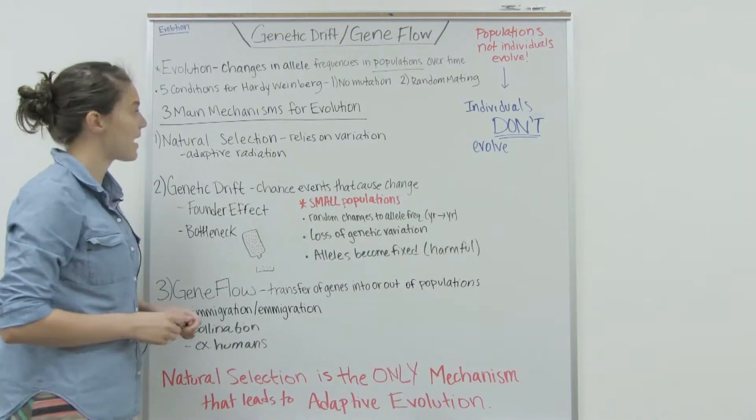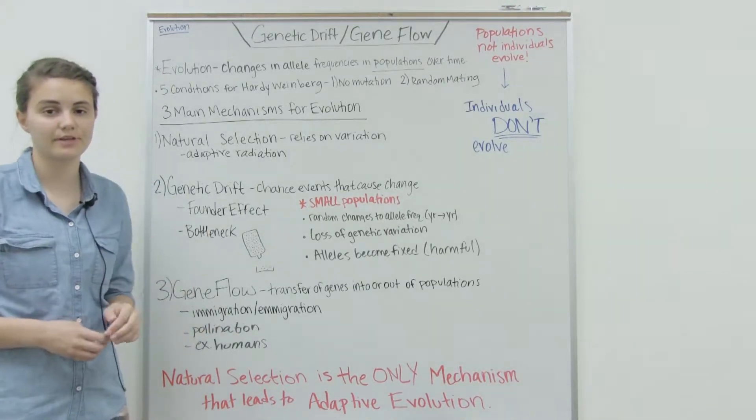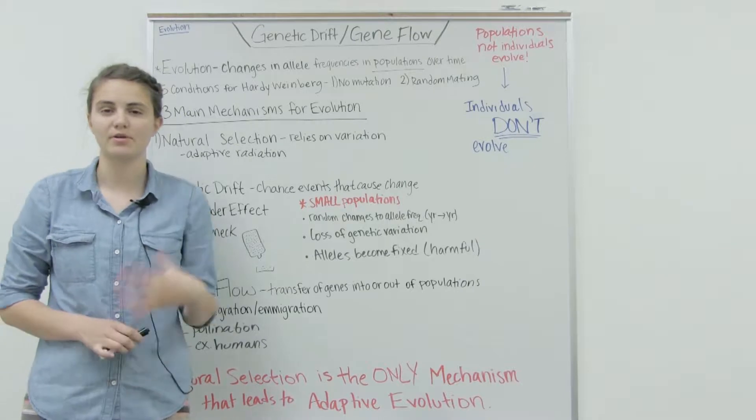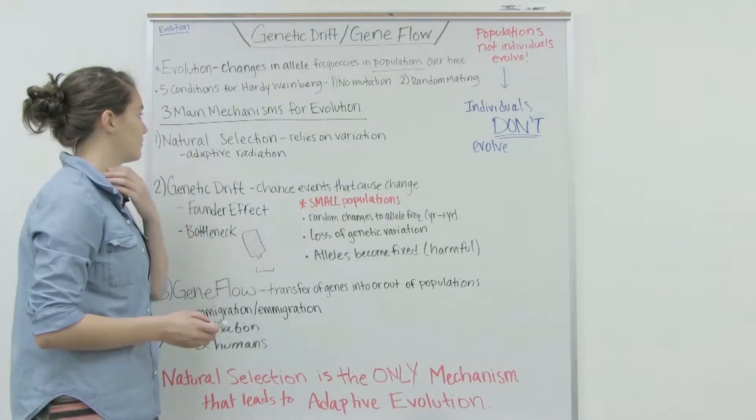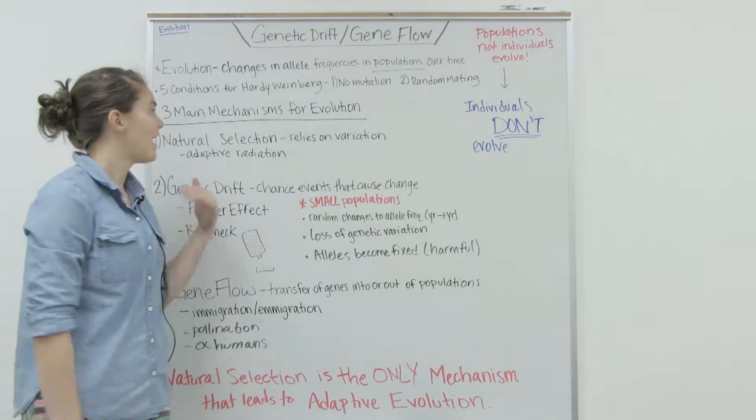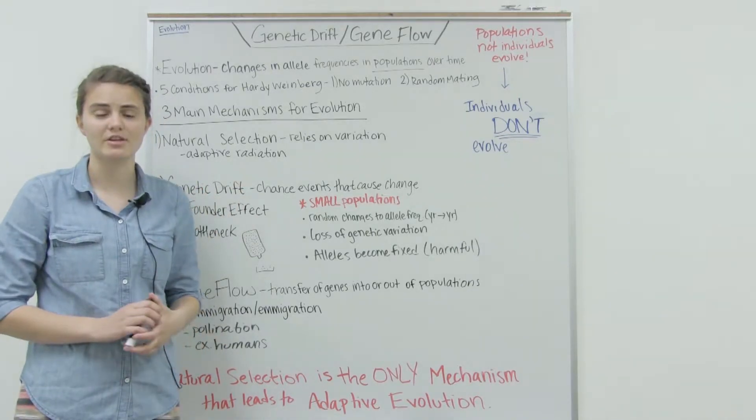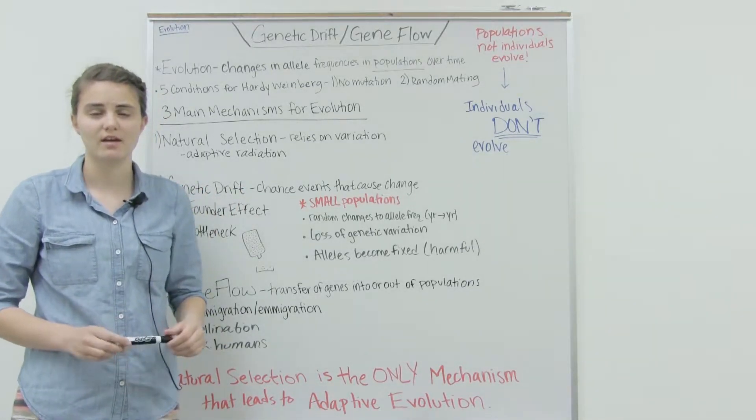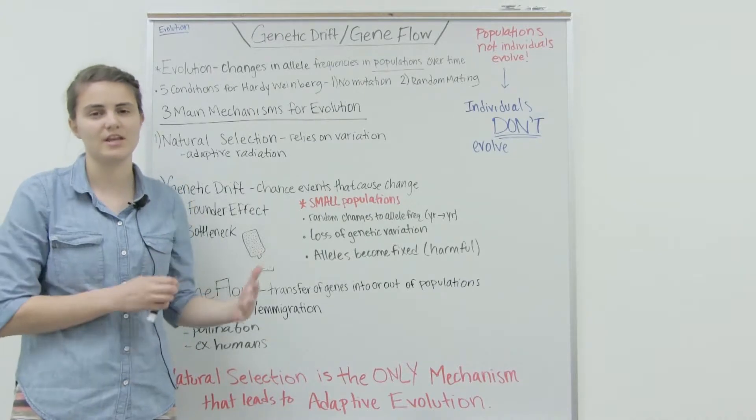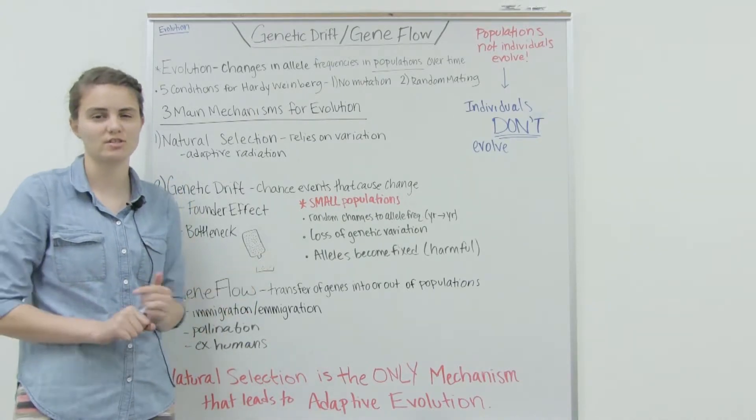If you remember back in other lecture videos, the Hardy-Weinberg equation and Hardy-Weinberg equilibrium. That's just a way we measure the average heterozygosity or the amount of variation in a population, because variation is important.